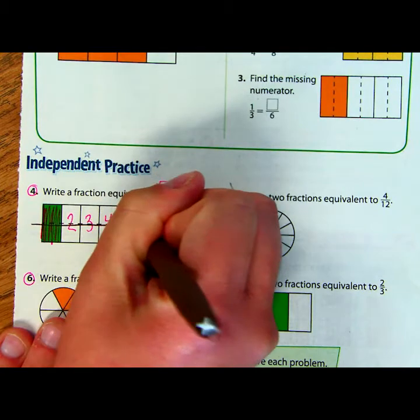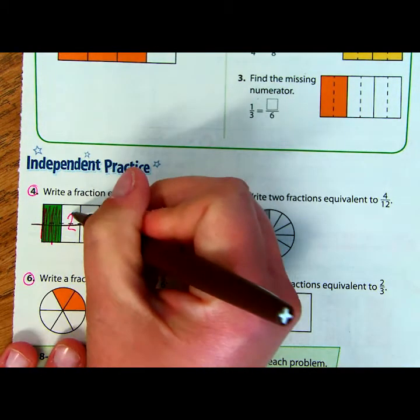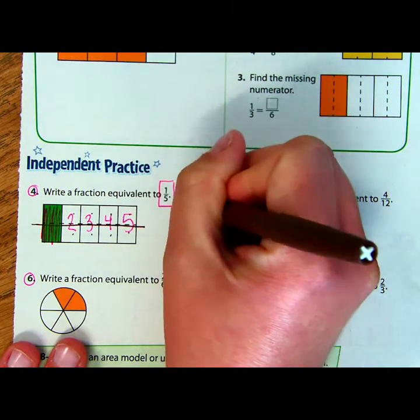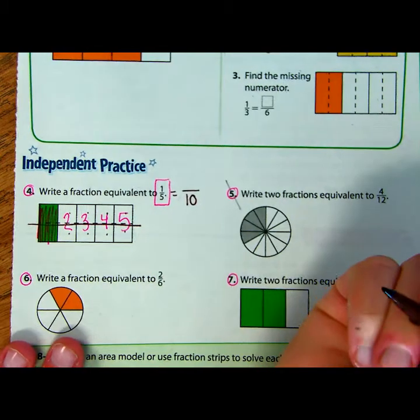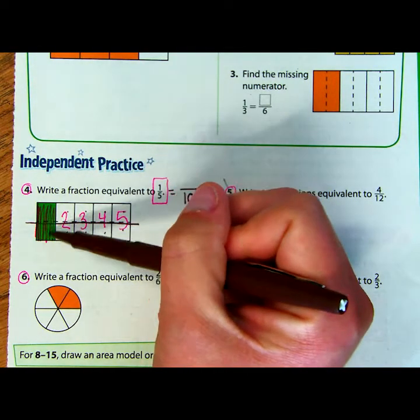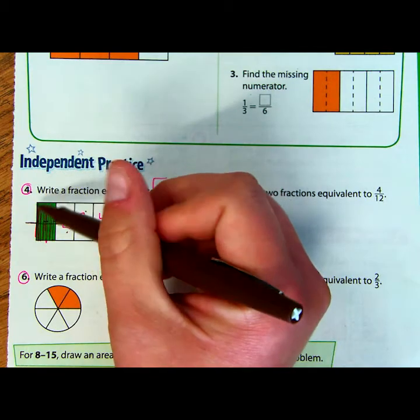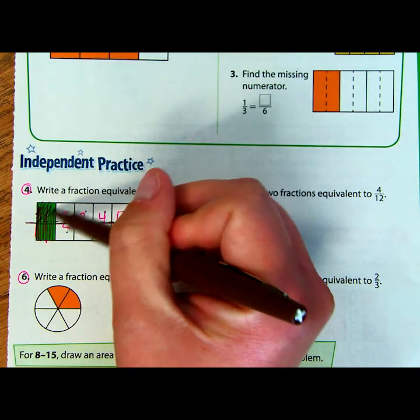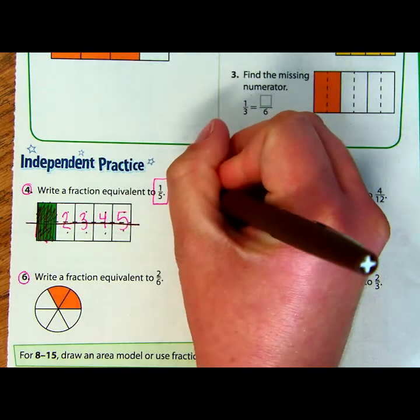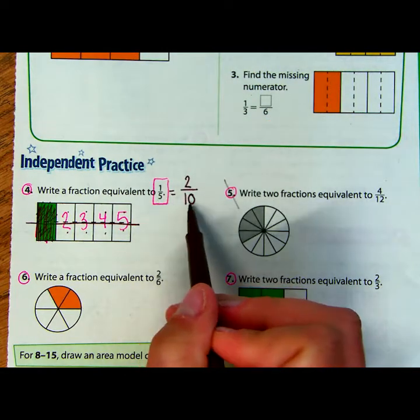And now you have, if you count 1, 2, 3, 4, 5, 6, 7, 8, 9, 10 equal parts that your whole figure is now divided into. When you look, we're still looking at just this green shaded section and now you want to ask yourself how many parts are shaded. Well, out of 10, now there's 1 and 2. So an equivalent fraction to 1 fifth is 2 tenths.